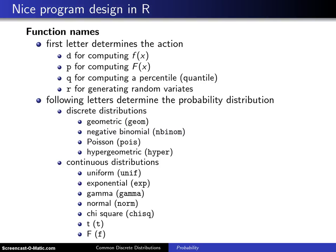The R functions associated with the binomial distribution, which we had seen previously — namely dbinom, pbinom, qbinom, and rbinom — are just special cases of a more general program design which is done very nicely in R.